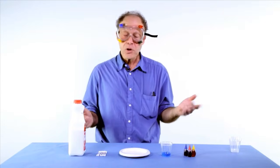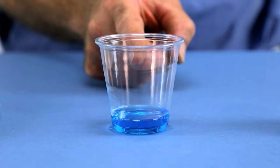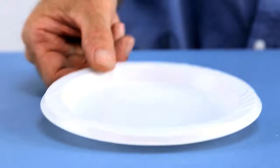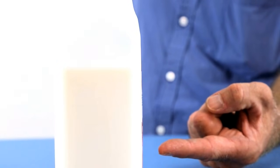You don't need much, you just need some food coloring, some liquid dish detergent or dish soap, a little plate that's kind of shallow, some cotton swabs or q-tips, and some milk. In this case we're using whole milk.